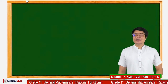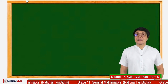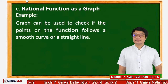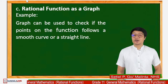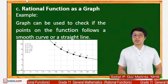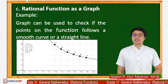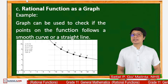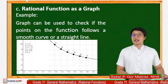After computing the run times from 10 to 20 seconds, we interpret the data using a graph — rational function as a graph. The graph can be used to check if the points on the function show a smooth curve or a straight line. As you can see, graphing those data gives a smooth curve. As the time gets higher from 10 to 20 seconds, the speed gets lower.